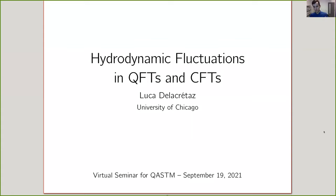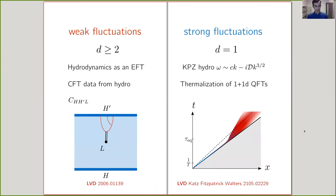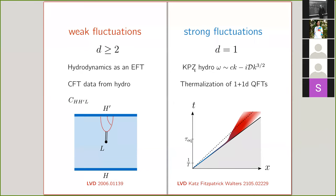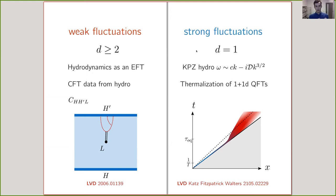In particular, these are fluctuations of conserved densities and currents, which occur in any interacting system at finite temperature. I'll focus on their consequences in quantum field theories and conformal field theories. We'll see there are situations where hydrodynamic fluctuations are weak or strong, depending on whether interactions between hydrodynamic fields are irrelevant or relevant.